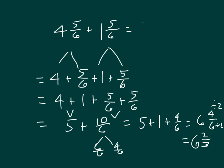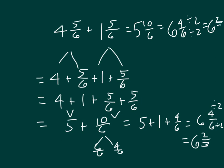So five sixths and five sixths is ten sixths, four plus one is five. Simplifying, we get six and four sixths, which equals six and two thirds. That's how we work with sums when adding mixed numbers — we must have like units and add like units.